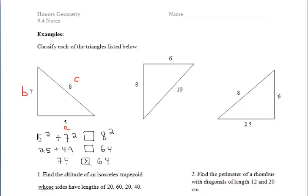74 is greater than 64. So if A squared plus B squared is greater than C squared, the triangle is acute.